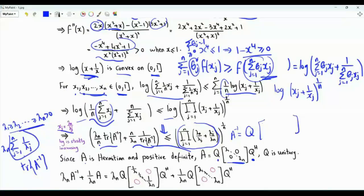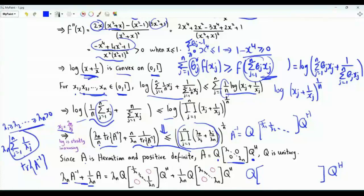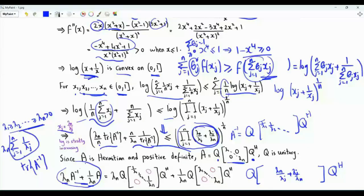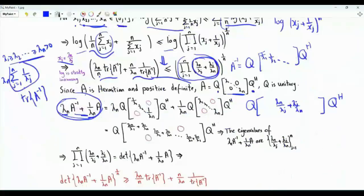A inverse is Q times the diagonal matrix with elements 1 over lambda 1, 1 over lambda 2, and so forth, times Q Hermitian. If we multiply A inverse by lambda n and A by 1 over lambda n and add, we get matrix Q on the left, Q Hermitian on the right, and between them a diagonal matrix whose jj element is lambda n over lambda j plus lambda j over lambda n. This means those terms are the eigenvalues of the matrix lambda n times A inverse plus 1 over lambda n times A. The product of those eigenvalues is the determinant of this matrix, so the determinant to the power 1 over n is greater than or equal to lambda n times trace of A inverse over n plus its reciprocal.